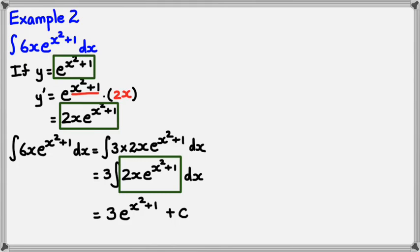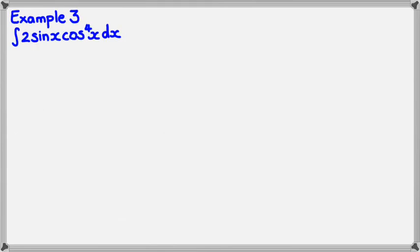I'm going to do one more question — it's to do with trig. Hopefully you get the general idea from this point, but I'll do one more. In this example, I want to integrate 2 sin x times cos x to the power of 4. I know that when I differentiate cos x, I get minus sin x, so I'm going to use the chain rule in reverse here.